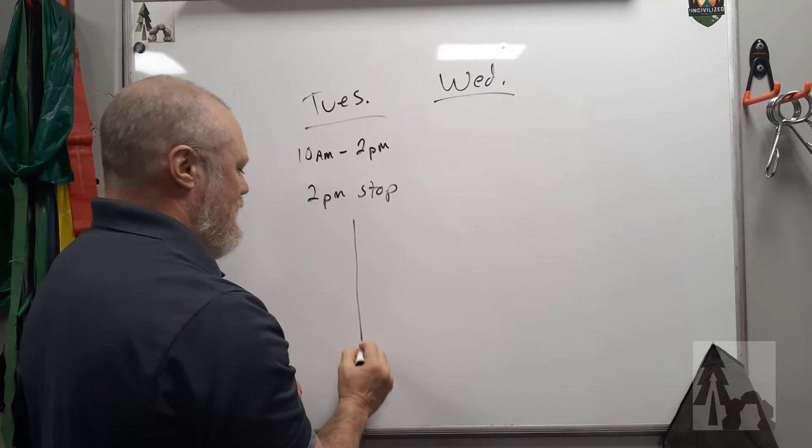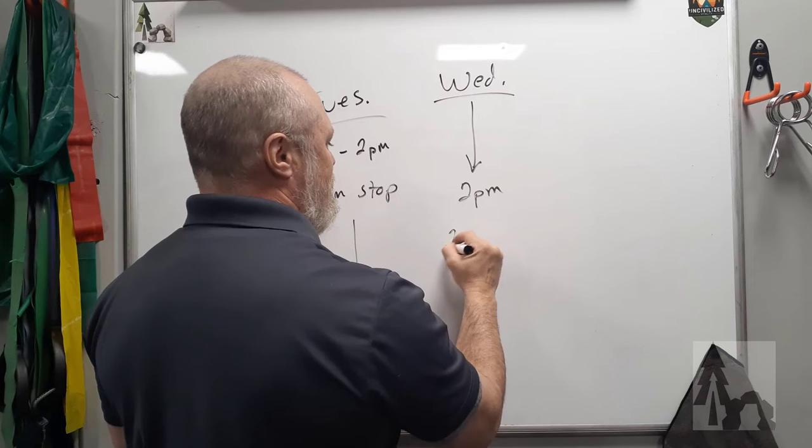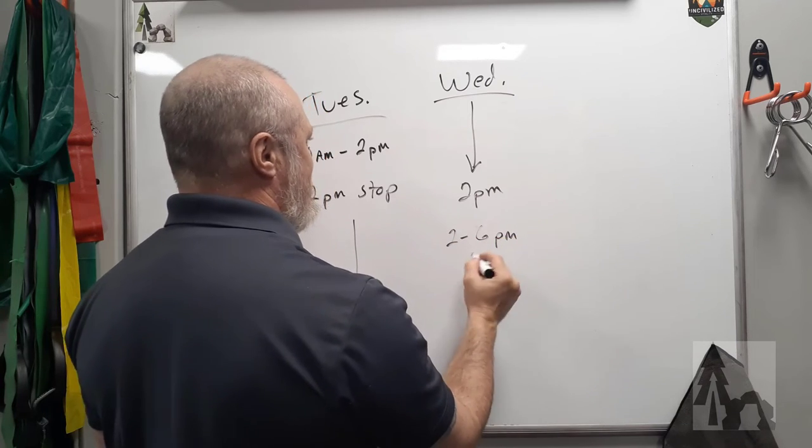So you get your first four hours and then you stop eating at 2 p.m. Alright, so everything's done. And I don't eat again until 2 p.m. on Wednesday and then from 2 to my normal 6 p.m. then I can eat.